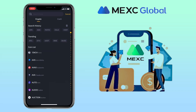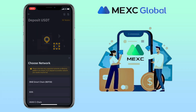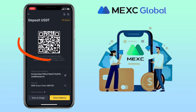Pick the same token — I'll choose USDT. Select the network you want to use; I will use BEP-20 Binance Smart Chain. Here you can scan the QR code or copy your deposit address. Let me copy mine.